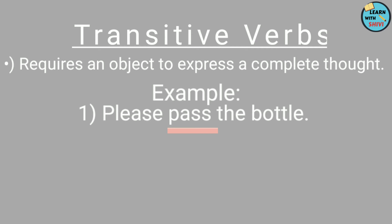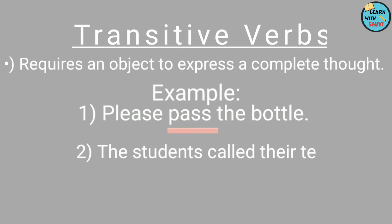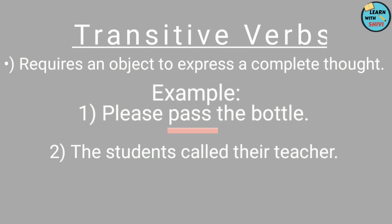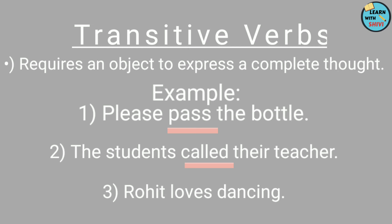Now let's have a look at the other examples. The second sentence is: 'The students called their teacher.' What is the verb? 'Called.' And again, if I remove the object, will it be a meaningful sentence? No. Hence, 'called' becomes a transitive verb. Similarly, in the third sentence: 'Rohit loves dancing.' Rohit loves — is it making any sense? Rohit loves what? Rohit loves dancing. Hence, 'loves' over here becomes our transitive verb.